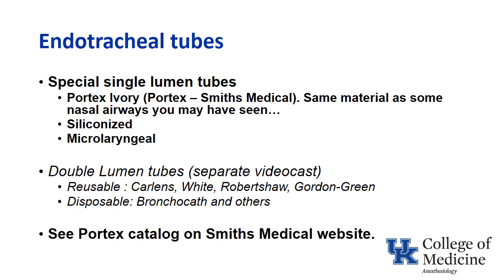In talking about special single lumen tubes, I'd like to bring to your attention a product made by PORTEX. The material is what they call ivory — it's not transparent, but it is very soft. You may have seen this same material used for some nasal airways. There are other less frequently used tubes made with silicone material. And there are micro laryngeal endotracheal tubes, which are essentially of a small caliber or diameter but of a normal length. Double lumen tubes will be discussed in a separate videocast.